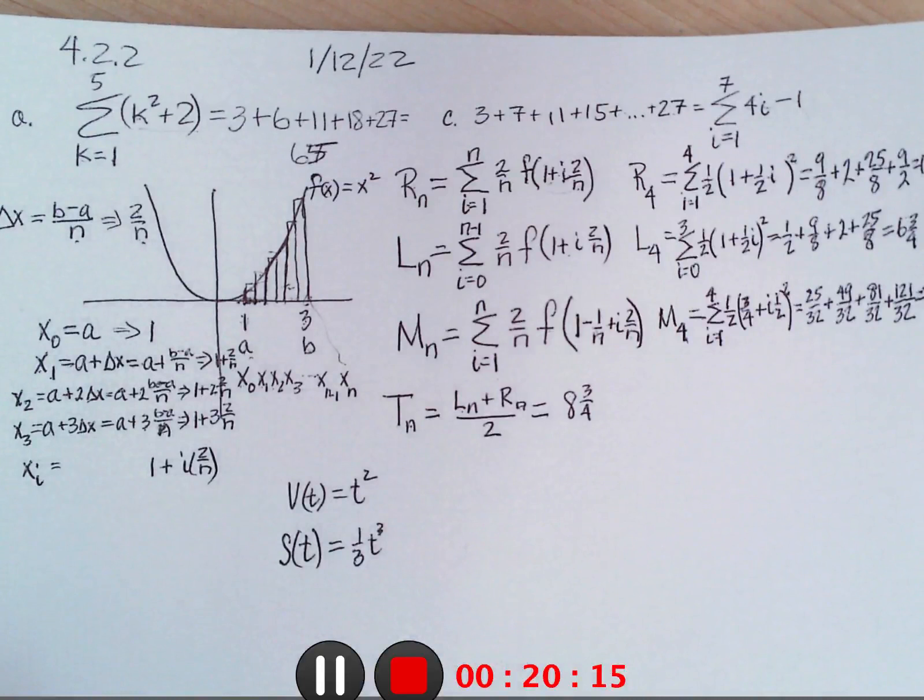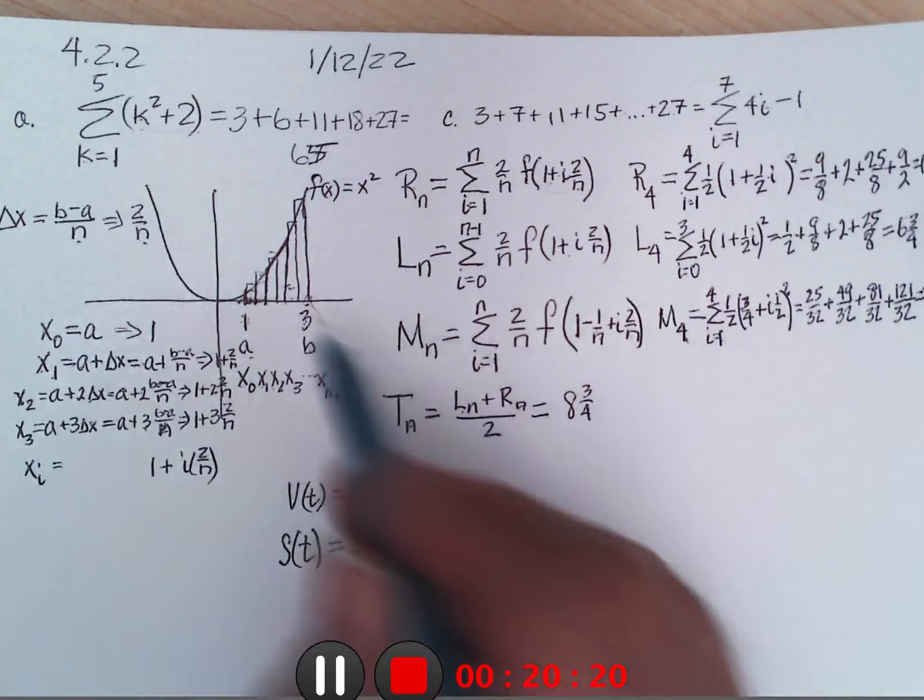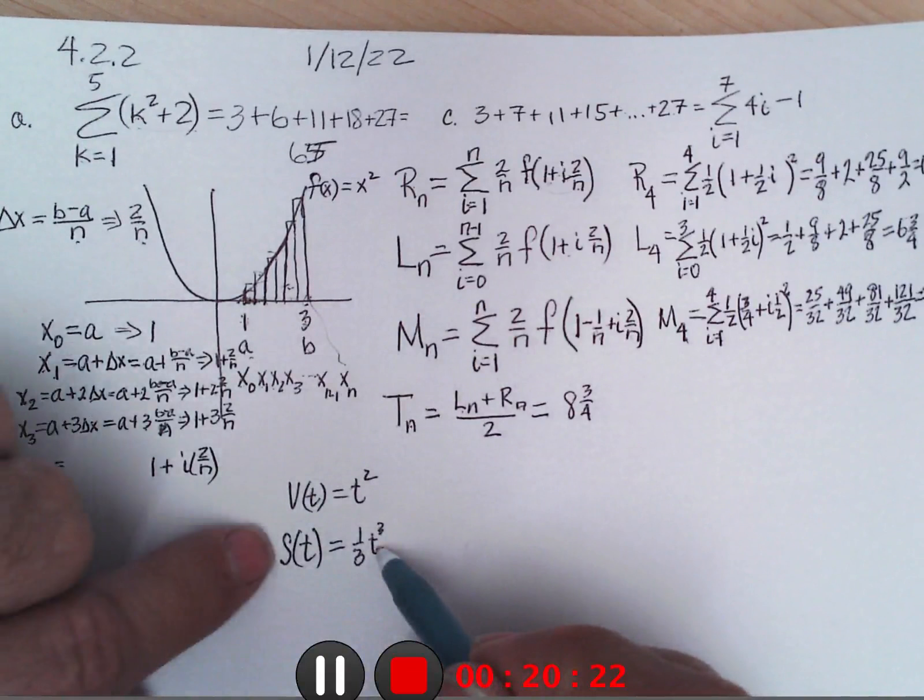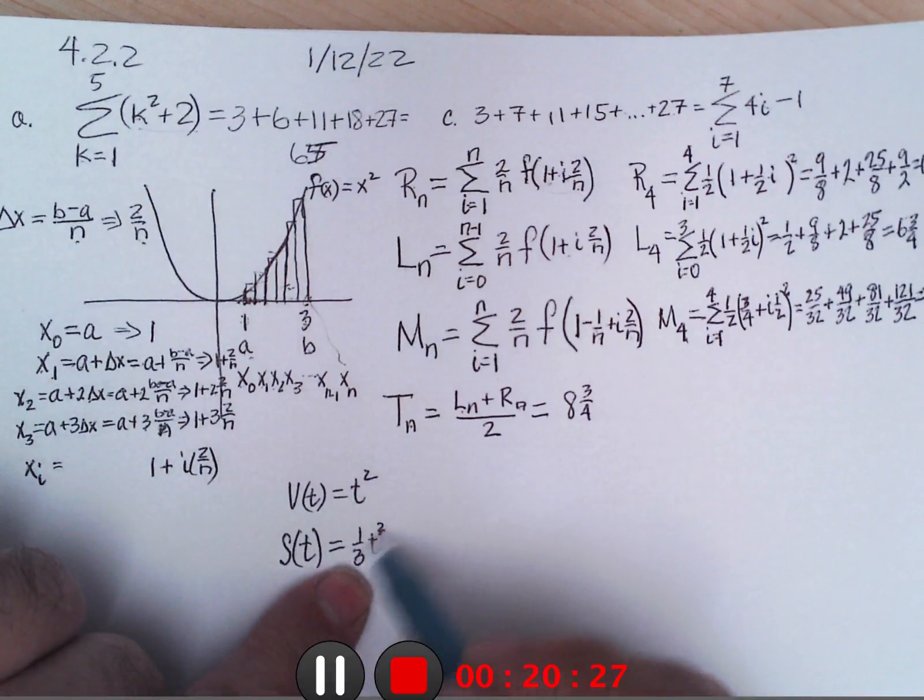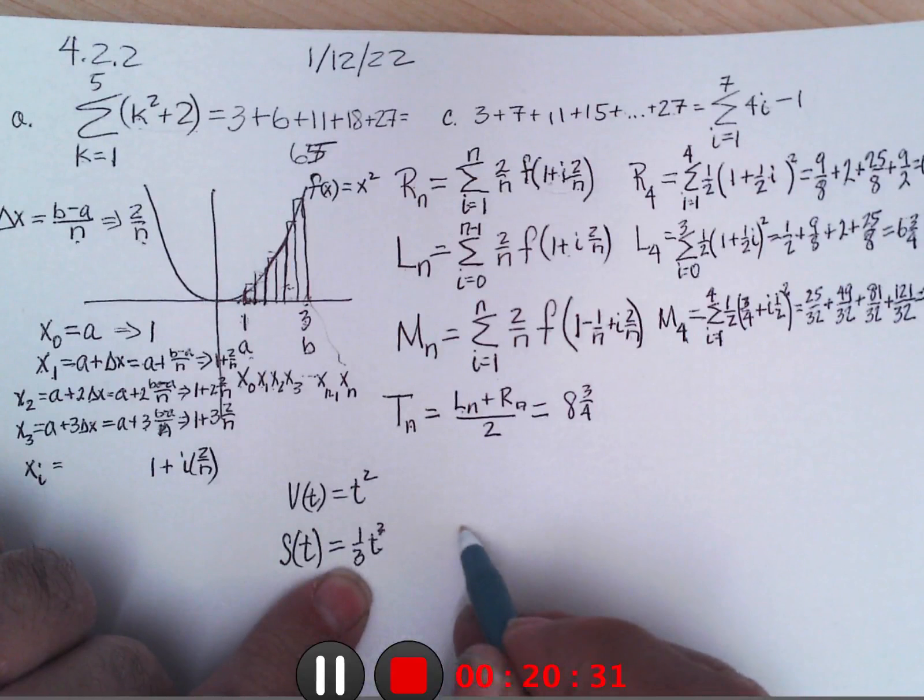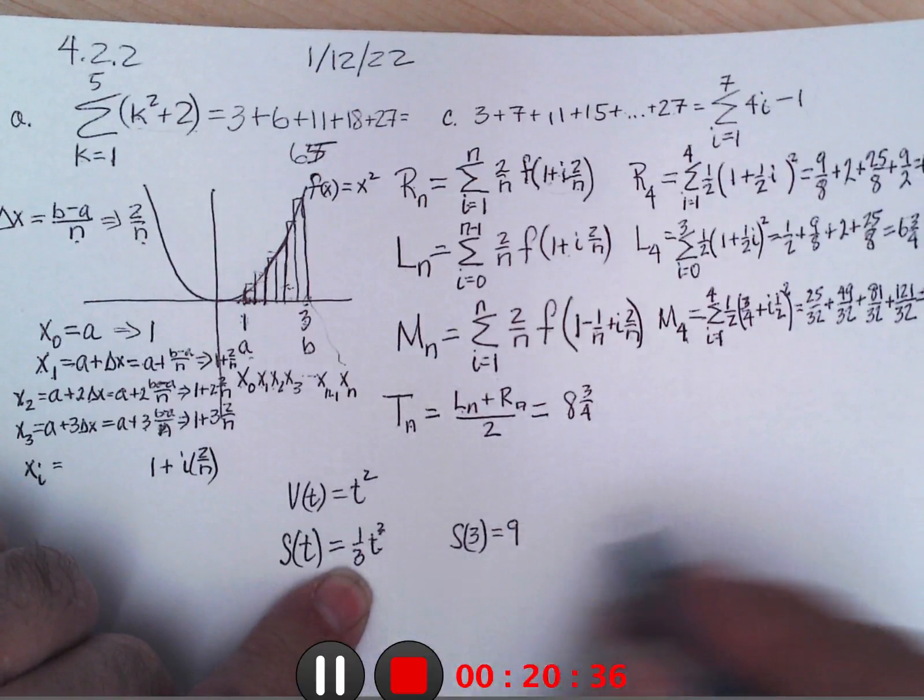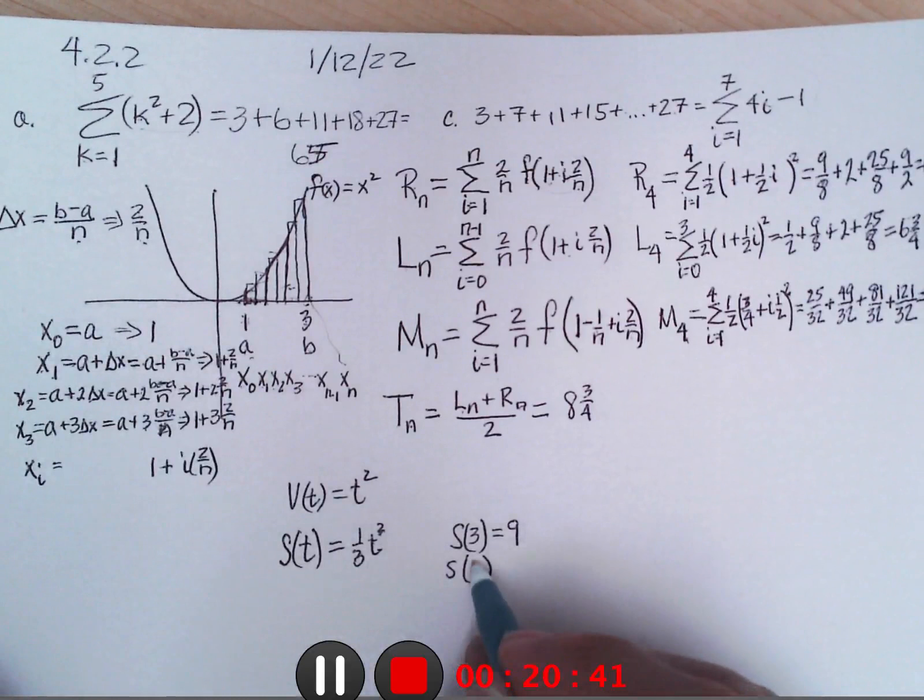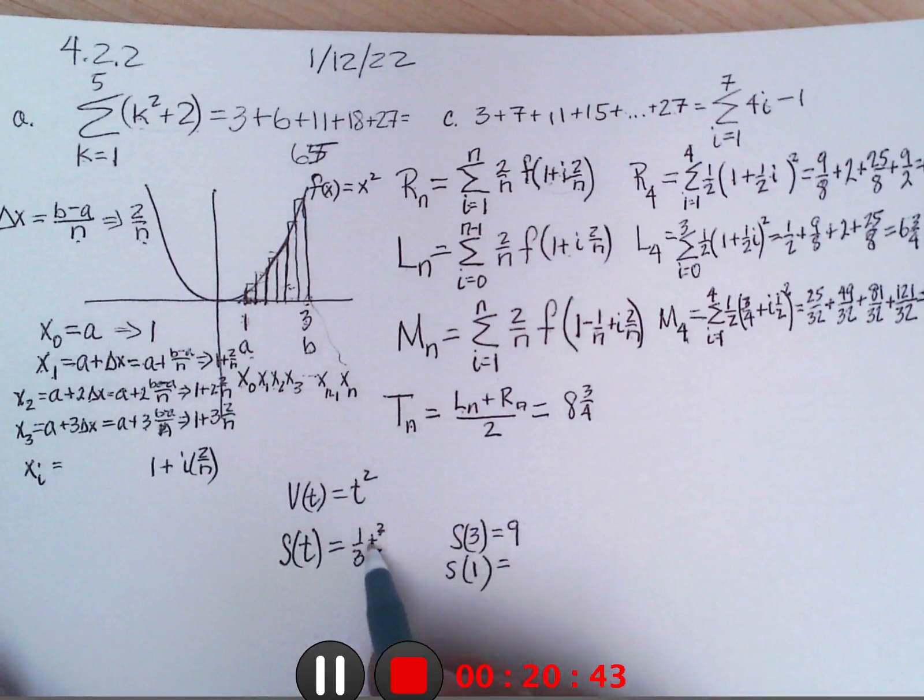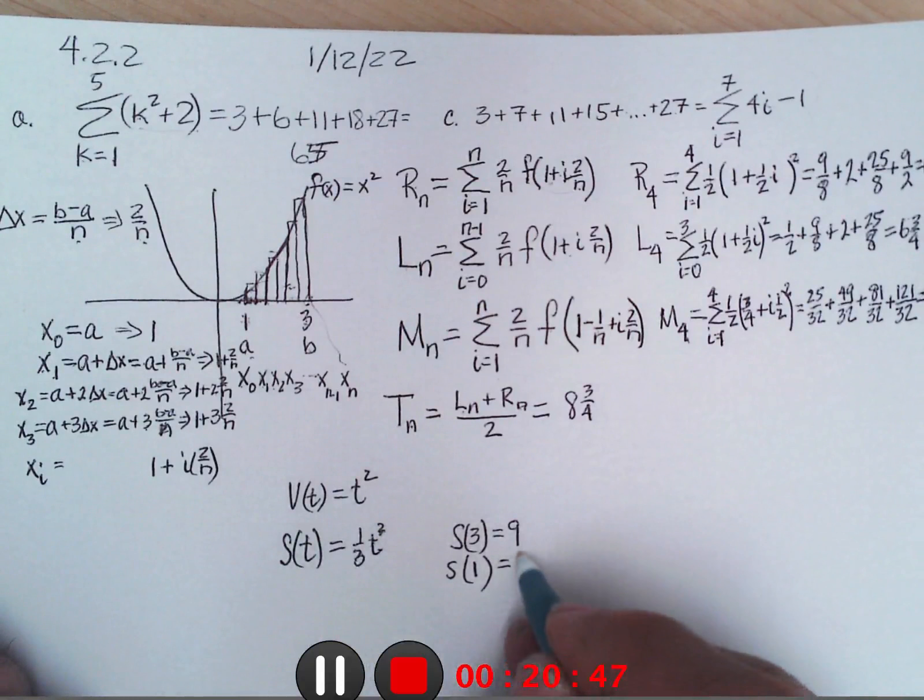So the derivative of this would be that. And if I'm trying to find it between 1 and 3, I could put 3 into here and find where the position is at 3. So 3 to the third is 27 times 1 third is 9. So s of 3 is 9. And s of 1, the position at 1, would be 1 to the third which is 1 times 1 third, 1 third.